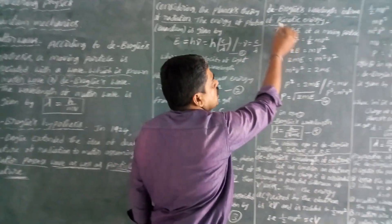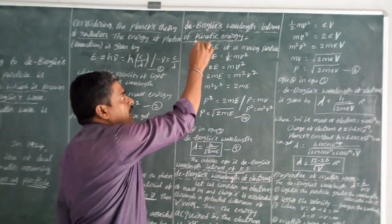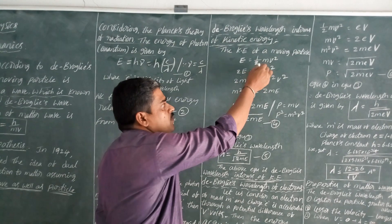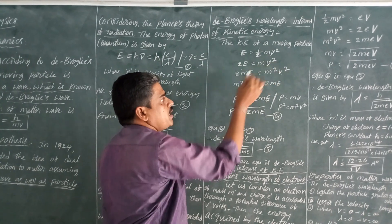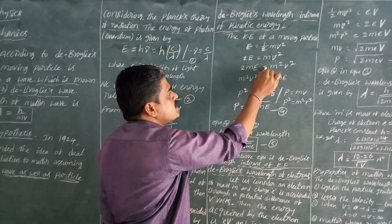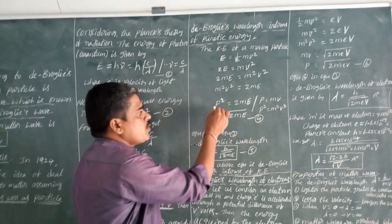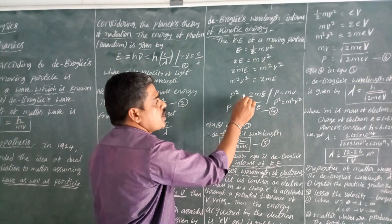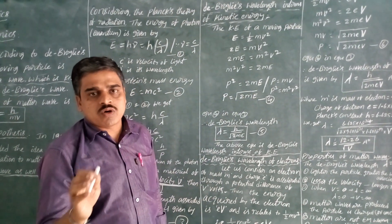Next is the De Broglie wavelength in terms of kinetic energy. We know that the kinetic energy of a moving particle is E is equal to half mv squared. From this, 2E is equal to mv squared. Multiplying both sides with m gives 2mE is equal to m squared v squared, so p squared is equal to 2mE, therefore p is equal to square root of 2mE.